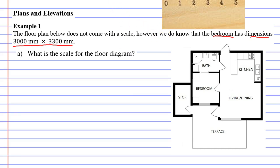So what does that mean? Well, that means for our bedroom that one of the sides is 3,000 millimeters and the other side is 3,300 millimeters. Obviously the longer side is going to be 3,300. Question A says what is the scale for the floor diagram?